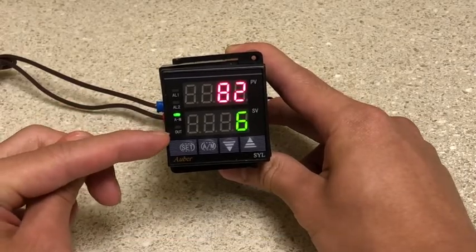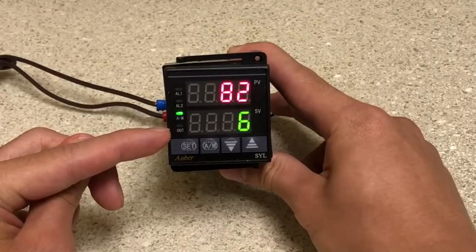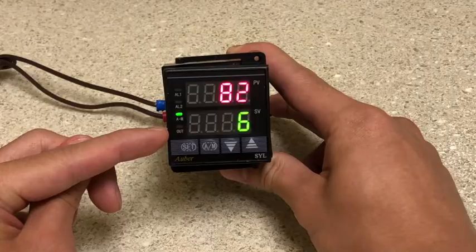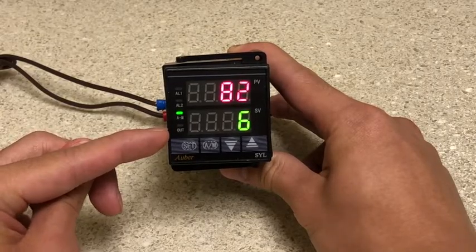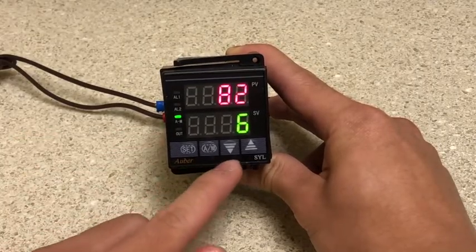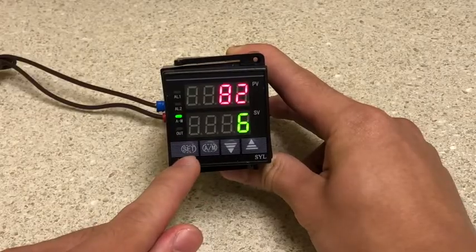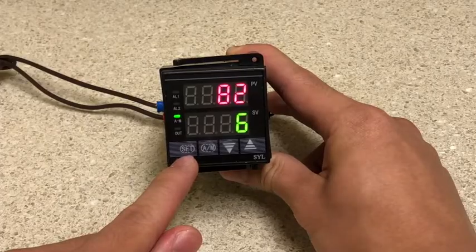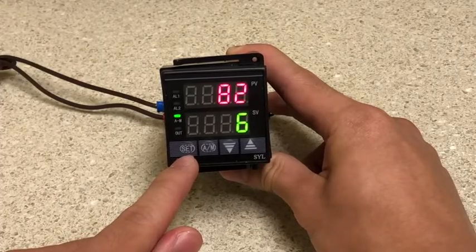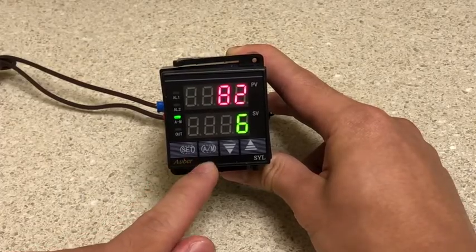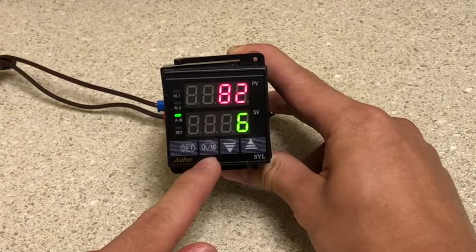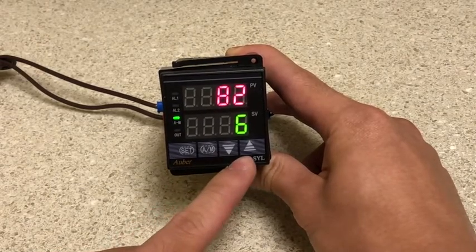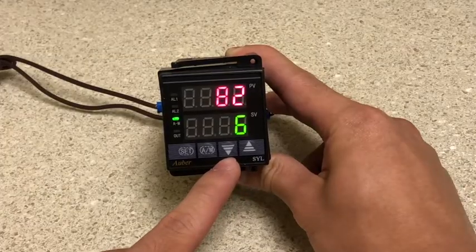Then finally here we have our OUT indicator. This shows whether there's power being delivered to the output. Now we have four keys on the bottom here. We have the SET key, holding it for two seconds to enter your parameter editing profile or pressing it once to check the current running step. Next you have your AM key to enter your program profile or to shift your digits, and you have your down and up arrow keys to increase or decrease your set value.